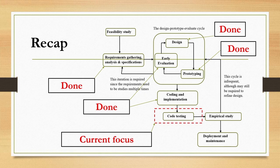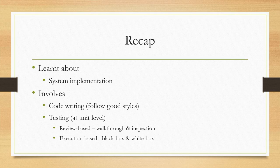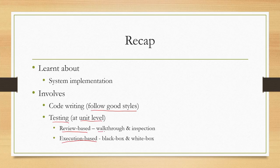Currently we are discussing the code testing stage — how to test the code we have written to implement the system. Code implementation involves code writing following good coding styles, and testing can be done at different levels. At the unit level we have learned about review-based testing and execution-based testing. Review-based testing involves code walkthrough and code inspection methods. Execution-based testing involves black box testing and white box testing, which we have discussed in detail in the earlier lectures.